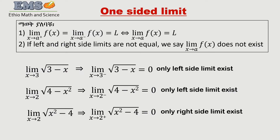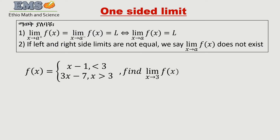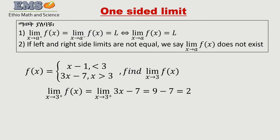Now consider a piecewise function. The limit of F of x as x goes to 3 — we look at which piece of the function applies. For the right-side limit, as x approaches 3 from the right, we use the function 3x minus 7. So the limit of 3x minus 7 as x goes to 3 from the right side — just plug in the value.